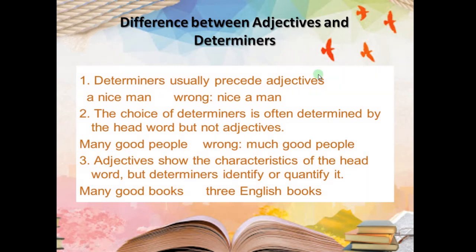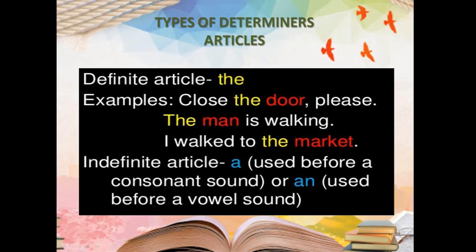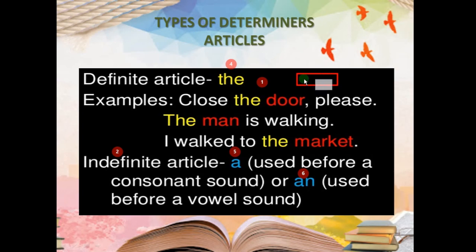Now the next one: Articles. There are two kinds of articles. The first one is the definite article, and the second is the indefinite article. The subparts are: 'the' (definite article), and 'a' and 'an' (indefinite articles). So in total we have two types, but three subparts: 'the,' 'a,' and 'an.'